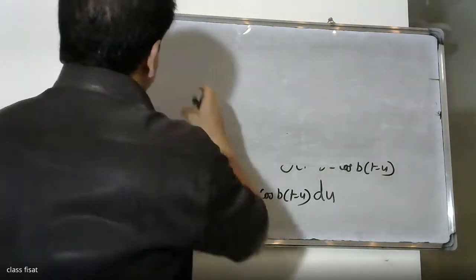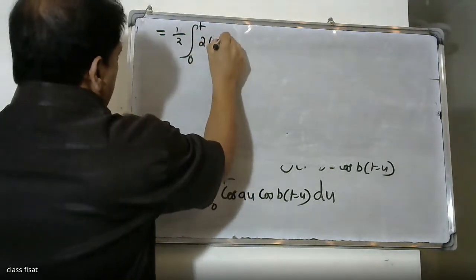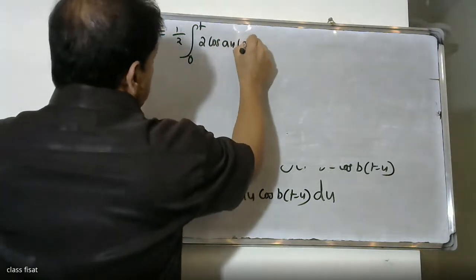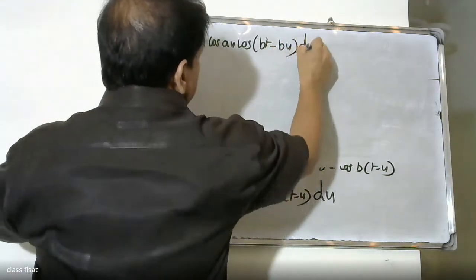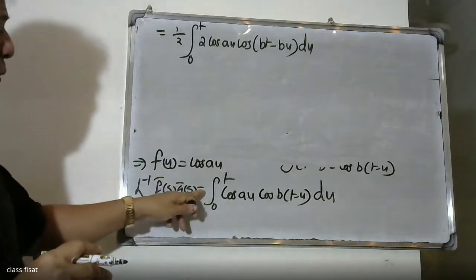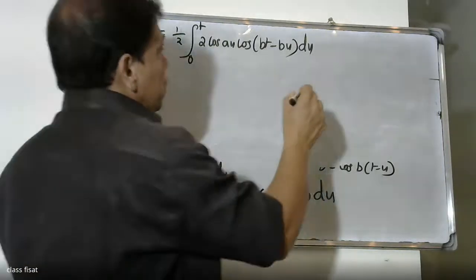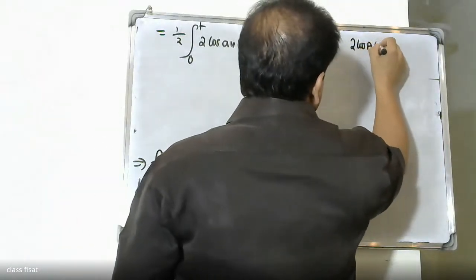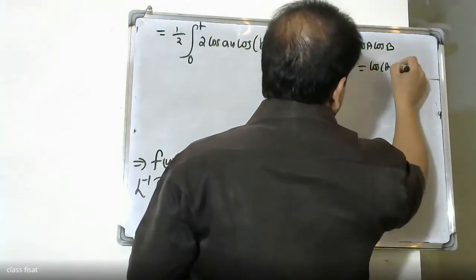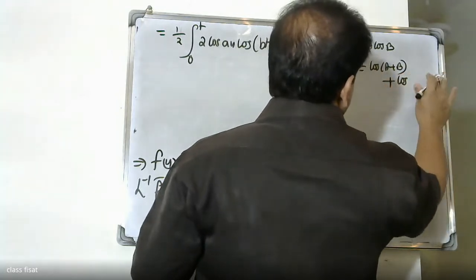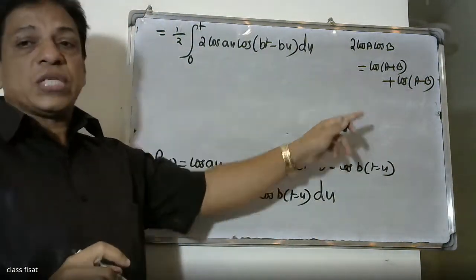This equals (1/2) times the integral from 0 to t of 2·cos(au)·cos(bt minus bu) du. We apply the trigonometric identity: 2·cos(A)·cos(B) equals cos(A plus B) plus cos(A minus B).